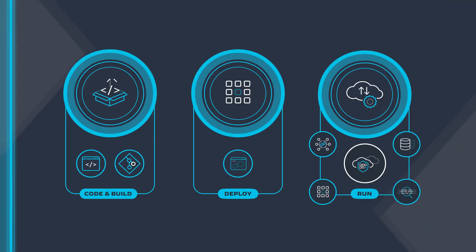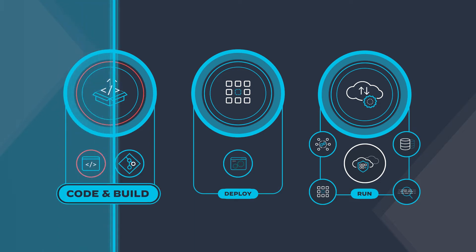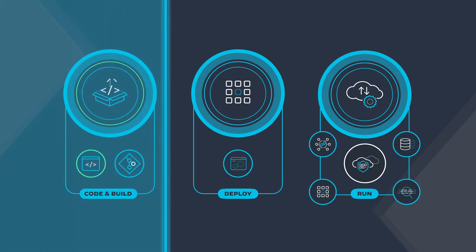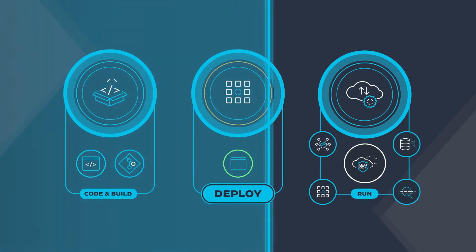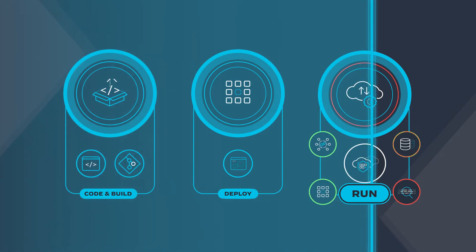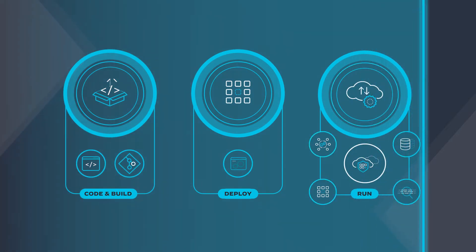The term cloud-native application protection platform, or CNAP, was coined by Gartner. Essentially, it refers to a platform that provides security, visibility, and control from the first time an app is built all the way through its operational life, wrapping it in APIs and tooling that emphasize automation and developer experience.